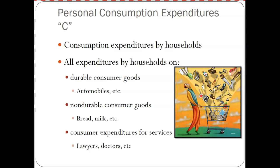Non-durable goods are goods that do not last more than two years or can be used only one time — for example, canned goods last longer than two years, but you eat that can of green beans one time. The last section is the service sector: that could be lawyers, doctors, financial services, banking, delivery services — Amazon, for instance, is heavily into the service sector. So entertainment, restaurants, and so on are big topics there for services.